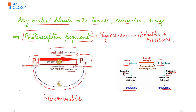In short day plants, if a flash of red light is given during the middle of the night while PFR is being converted into PR, all the PFR that had changed to PR reverts back, hence inhibiting flowering. If a flash of red light is followed by a flash of far red light, the effect of red light is reversed, hence causing flowering. This applies in the case of short day plants.